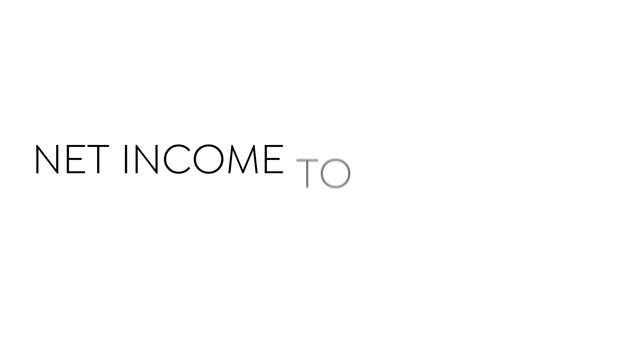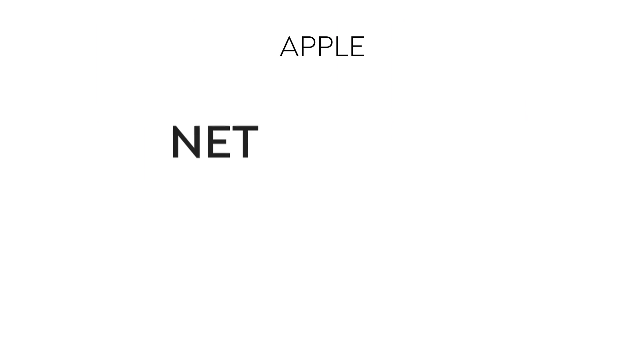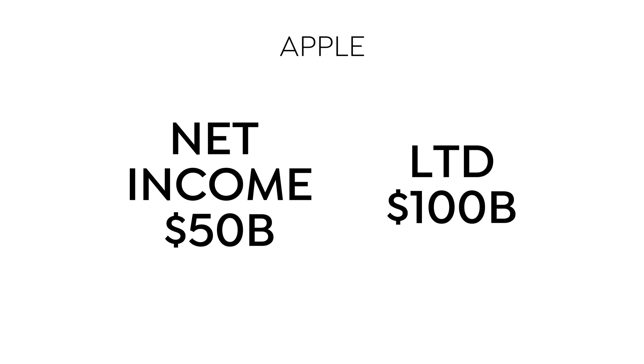The last important ratio to perform is the net income to long-term debt analysis. This ratio takes the net income from the income statement and divides it by the long-term debt in the liabilities section. For Apple, net income in 2020 was $50 billion and its long-term debt was $100 billion. Divide the two and you get 0.5 — that is a great ratio.